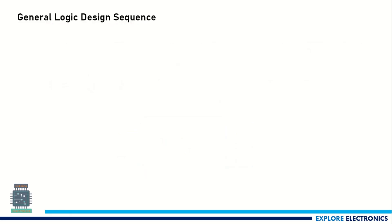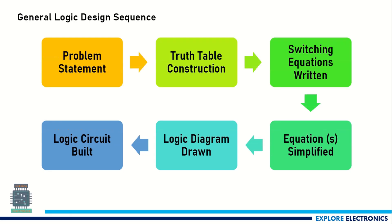Looking at the general logic design sequence, first we need to define the problem statement — what functionality we are supposed to implement or construct as a logic circuit. Once the problem statement is defined, we need to construct the truth table. The truth table shows, for different combinations of inputs, what the output should be.